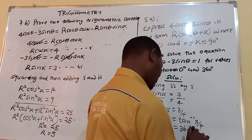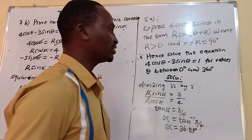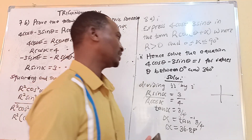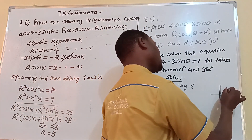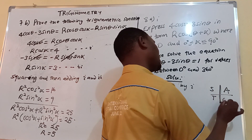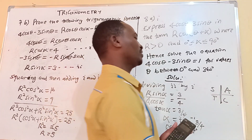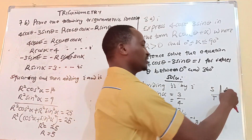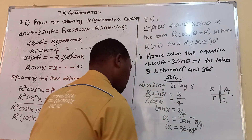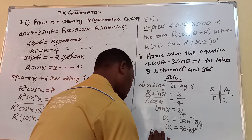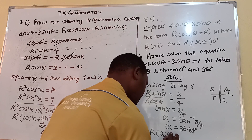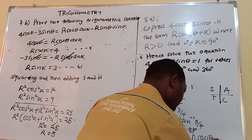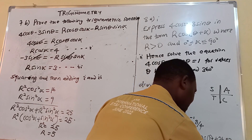We can round alpha to 36.87 degrees. We are told alpha must lie between 0 and 90 degrees, and since tan is positive in the first quadrant, we only require the first quadrant value. Therefore, the answer to part one is: 4 cos theta minus 3 sin theta equals 5 cos(theta plus 36.87 degrees).